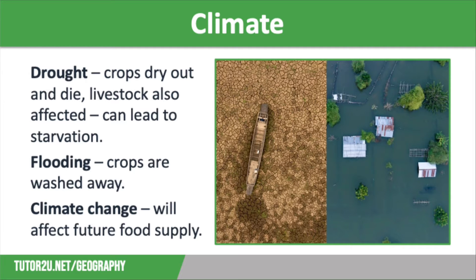In complete contrast, flood events can also lead to food insecurity as crops are washed away and livestock drown. This often happens during tropical storms such as Typhoon Haiyan, which hit the Philippines in 2013 and had a catastrophic impact on food supplies in this region. Climate change is leading to more extreme weather, for example more frequent and more intense tropical storms, as well as more heatwaves and drought events, meaning that it will be more challenging to grow crops and rear livestock in order to maintain food supplies in the future.